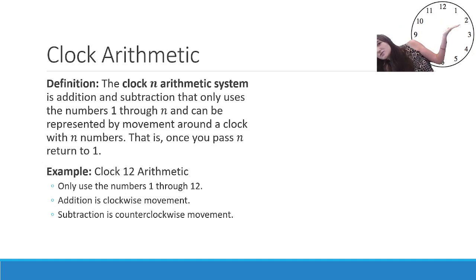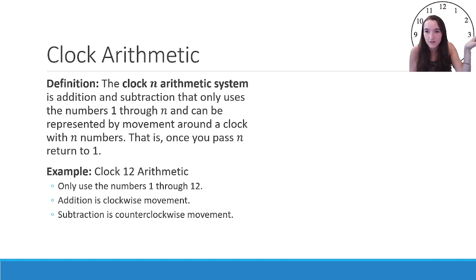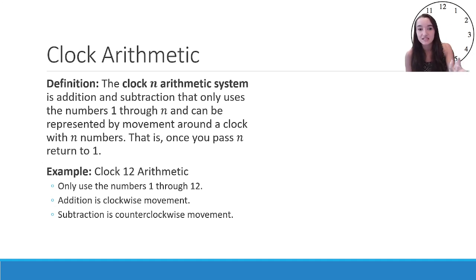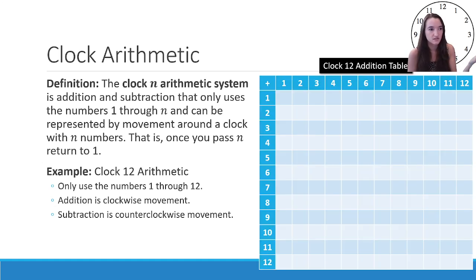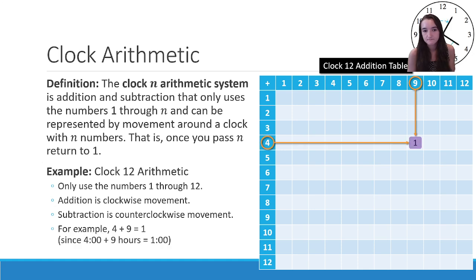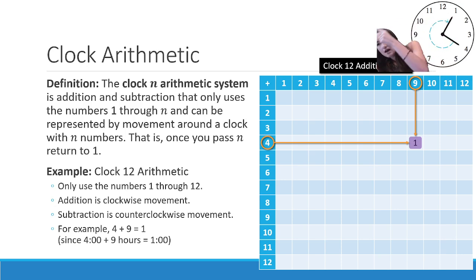A Clock N Arithmetic system is addition and subtraction that only uses the numbers 1 through N, and can be represented by movement around a clock with N numbers. Once you pass N, we return to 1. The one you're familiar with is Clock 12 Arithmetic, because that's what a normal clock is — 12 numbers. When we move around the clock and get to 12, we end up back at 1 and repeat. It's cyclical.